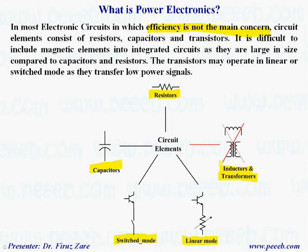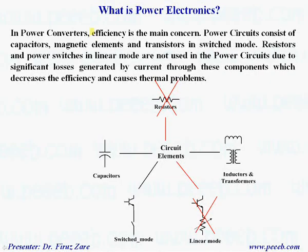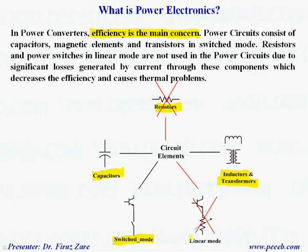The transistor may operate in linear or switch mode, and the reason is that the electronic circuit operates at low voltage and low power. In power converters, efficiency is the main concern. Power circuits consist of capacitors, magnetic elements like inductors or transformers, and transistors operating in switch mode. We don't want any lossy components like resistors or linear mode devices because we are talking about high power, high current, and these lossy components increase losses, decrease efficiency, and cause thermal problems.